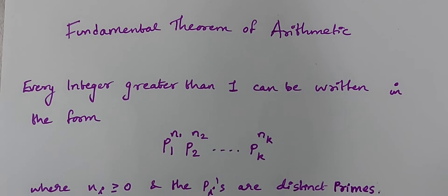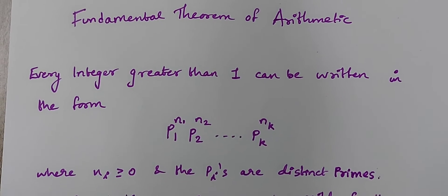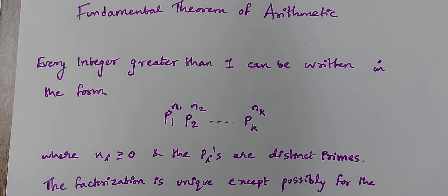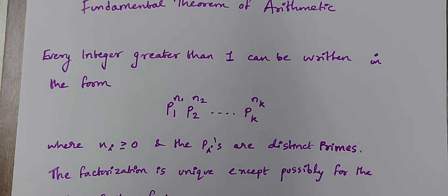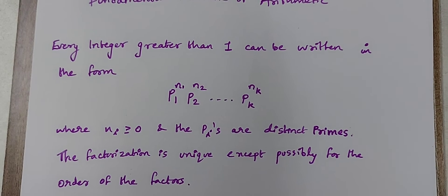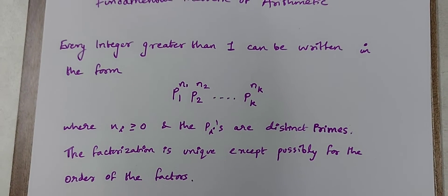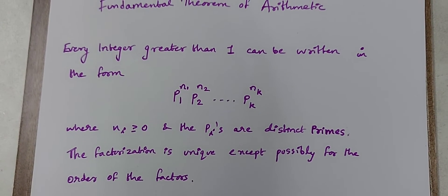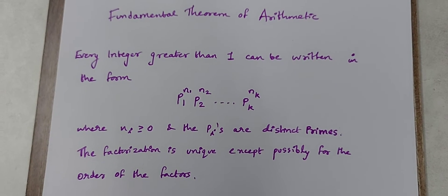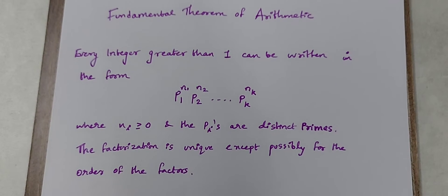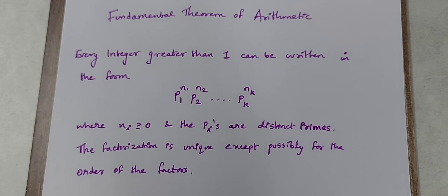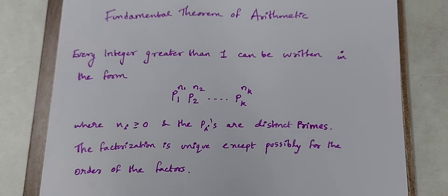Informally, the fundamental theorem of arithmetic states that every integer greater than 1 can be expressed as a product of primes. It can actually be factorized as a product of primes, and that too uniquely. So the existence of the factorization of a number greater than 1 into a product of primes, and the uniqueness of such a factorization, is what the fundamental theorem of arithmetic says.